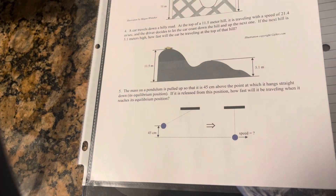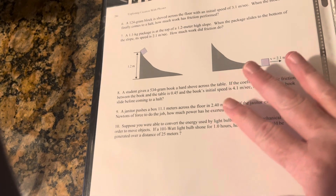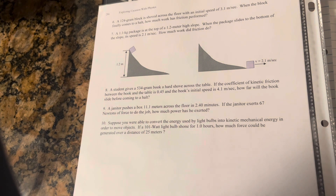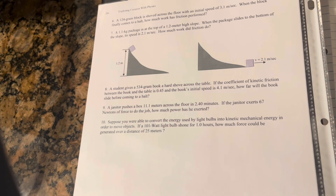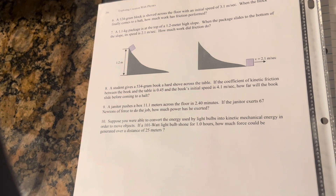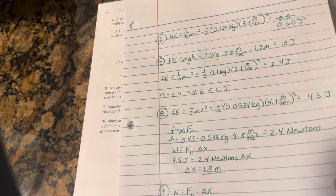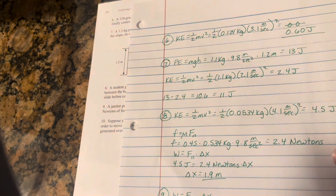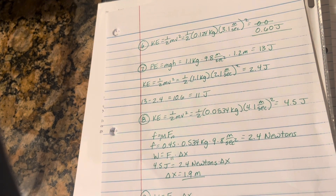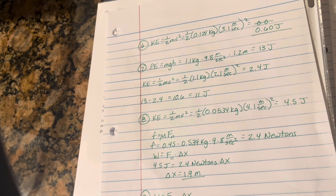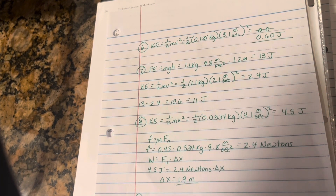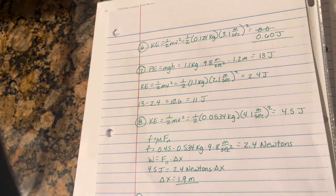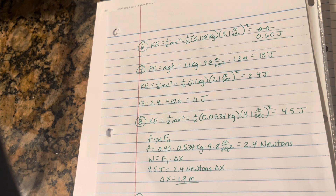Problem six: a 124-gram block is shoved across the floor with an initial speed of 3.1 meters per second. When the block finally comes to a halt, how much work has friction performed? Since the block stops, all the energy has been removed by friction. The kinetic energy is one-half mv²: 0.5 times 0.124 kg times 3.1 m/s squared, giving 0.60 joules. That's the answer — friction did 0.60 joules of work.